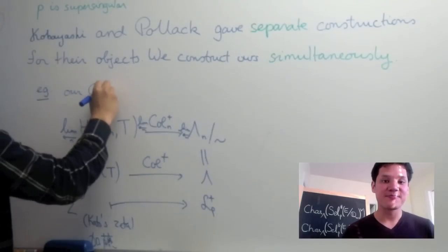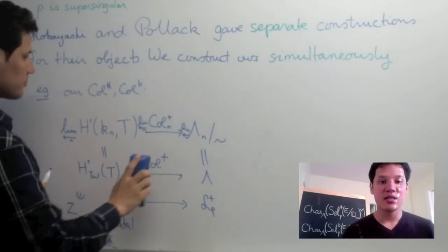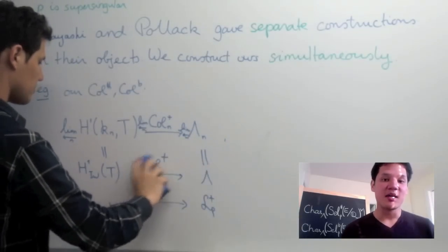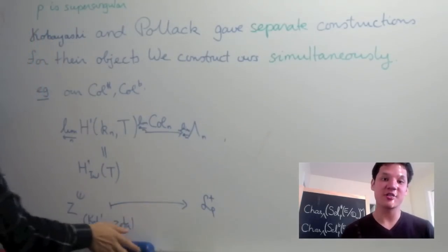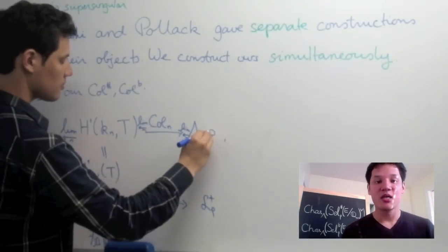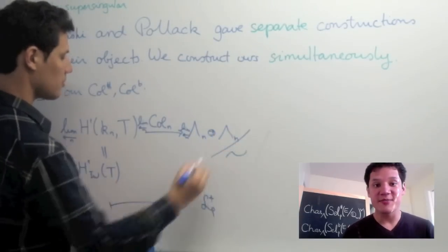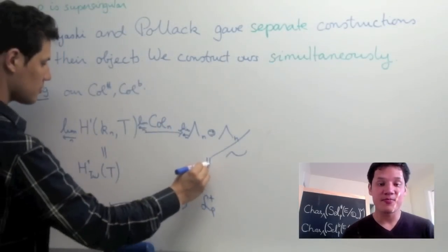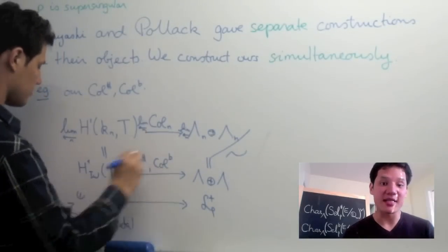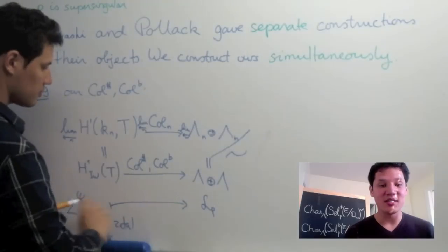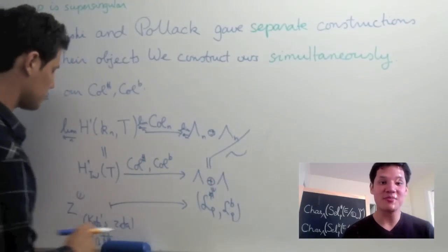Now in our case, we construct a map col n at finite levels that maps into a direct sum of two standard quotients of the Iwasawa algebra modded out by a certain condition. When ap is not equal to zero, we have not been able to split this map into two components. Nevertheless, miraculously, once we take the inverse limit, the map splits and we call the components col-sharp and col-flat. And again, very conveniently, the image of Kato's zeta element gets mapped to the vector lp-sharp, lp-flat.